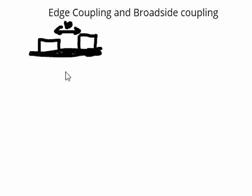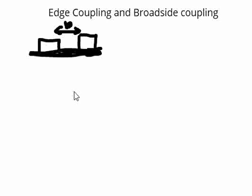There will be coupling between these traces, which is called edge coupling. Edge coupling basically happens due to the magnetic field around these traces. For this coupling to happen, it need not be that these two traces are only on the top layer — this can be a stripline routing as well. Stripline means the traces are routed in the inner layers which have a reference plane on the top and the bottom, and in such cases also there will be coupling between these traces.